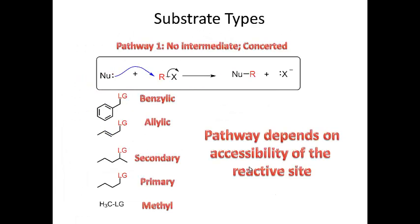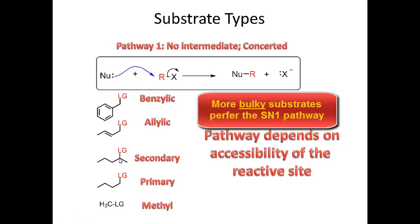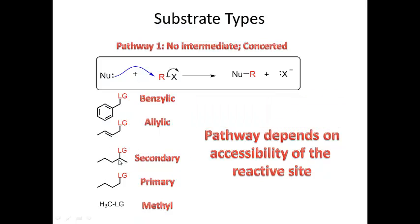One of the hardest things in organic chemistry is picking out which mechanism is operating in a particular reaction. The SN2 pathway is concerted, meaning it all happens at the same time — the nucleophile comes in and the leaving group leaves simultaneously. The types of substrates that can react through this pathway are benzylic, allylic (adjacent to a double bond), secondary, primary, and methyl substrates. This pathway depends on how accessible the reactive site is — the less accessible it is, the more the mechanism will lean toward SN1.